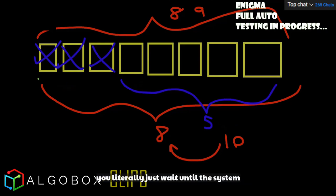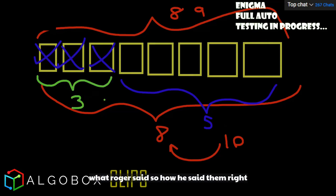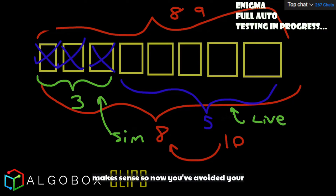If you literally just waited till a system lost three in a row, and like Roger said, you sim these first three and then you start here and you go live. Make sense? So now you've avoided your death roll and then you can let the system roll.